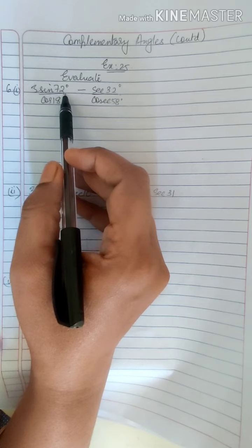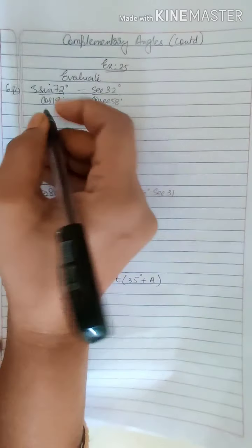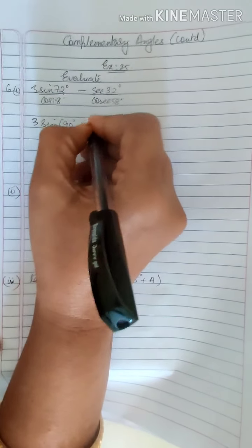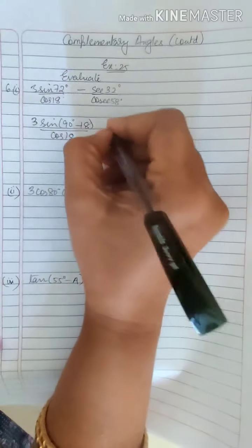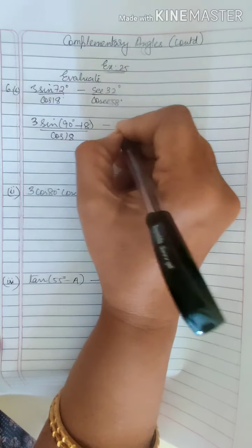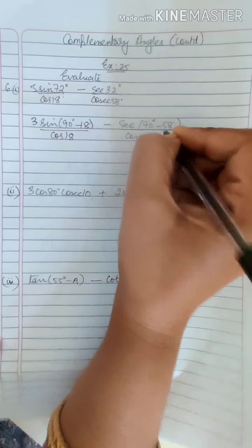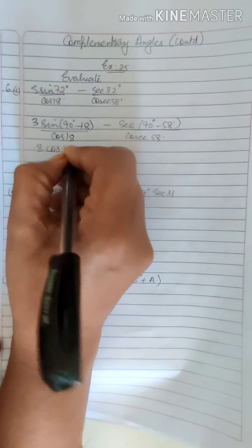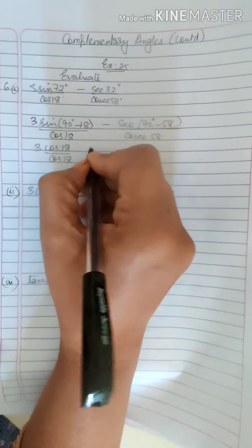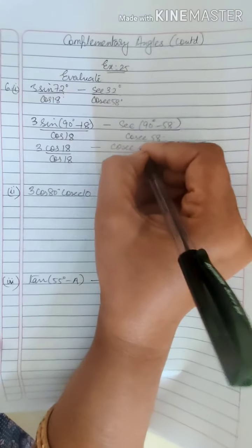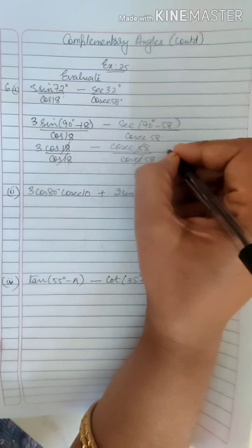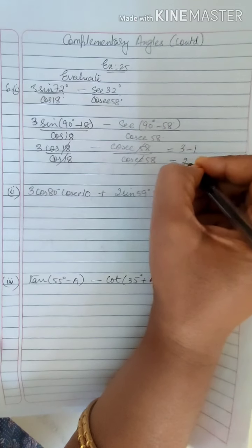Now here 72 can be written as 90 minus 18. So 3 sin(90 minus 18) upon cos 18 minus secant 32 can be written as 90 minus 58 upon cosecant 58. So you get 3 cos 18, because sin(90 minus theta) is cos theta, upon cos 18 minus cosecant 58 upon cosecant 58. This gets cancelled and you get 3 minus 1 which is equal to 2.